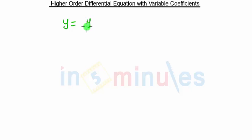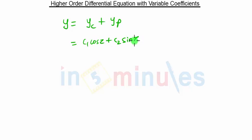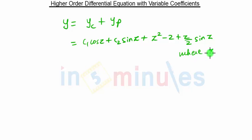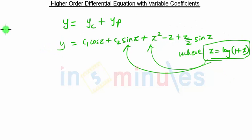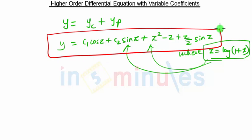The final solution is y = yc + yp, so y = c₁ cos(z) + c₂ sin(z) + z² - 2 + (z/2)·sin(z). We always note that z = log(1 + x) from our earlier substitution. You can substitute z = log(1 + x) back into the equation to express the answer in terms of x.